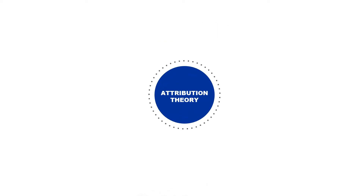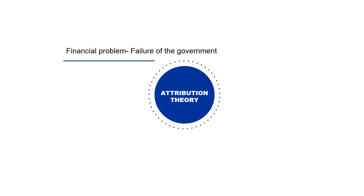What is attribution theory? This explains that we easily attribute things that happen to us to several factors. For example, a person may attribute his financial problem to the failure of government in providing services. Or you try to attribute your poor economic status to the area that you are in, because you live in a very marginalized area.